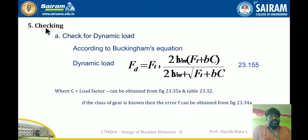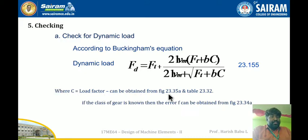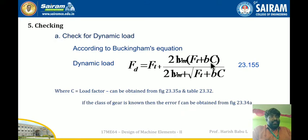The fifth step is checking, which covers dynamic load, wear, and endurance. First, check for dynamic load using the Buckingham equation (equation 23.155): FD = Ft + [21Vm(Ft + BC)] / [21Vm + √(Ft + BC)], where Vm is the mean velocity and Ft is the tangential tooth load from previous steps. The load factor C can be obtained from figure 23.35A or table 23.32. If the class of gear is known, use figure 23.34A. Substitute the values to get the dynamic load FD.